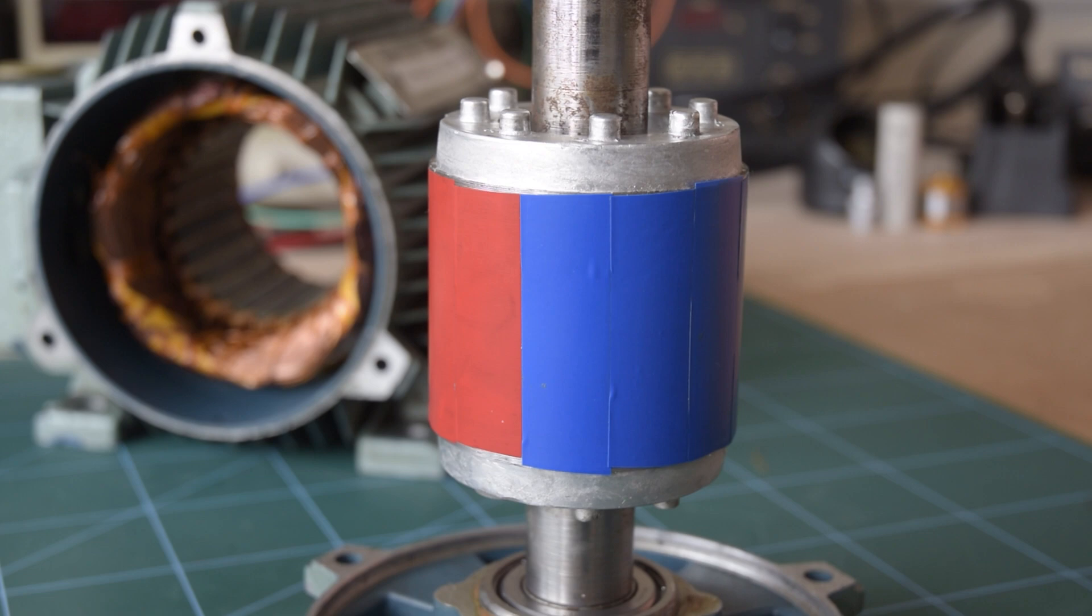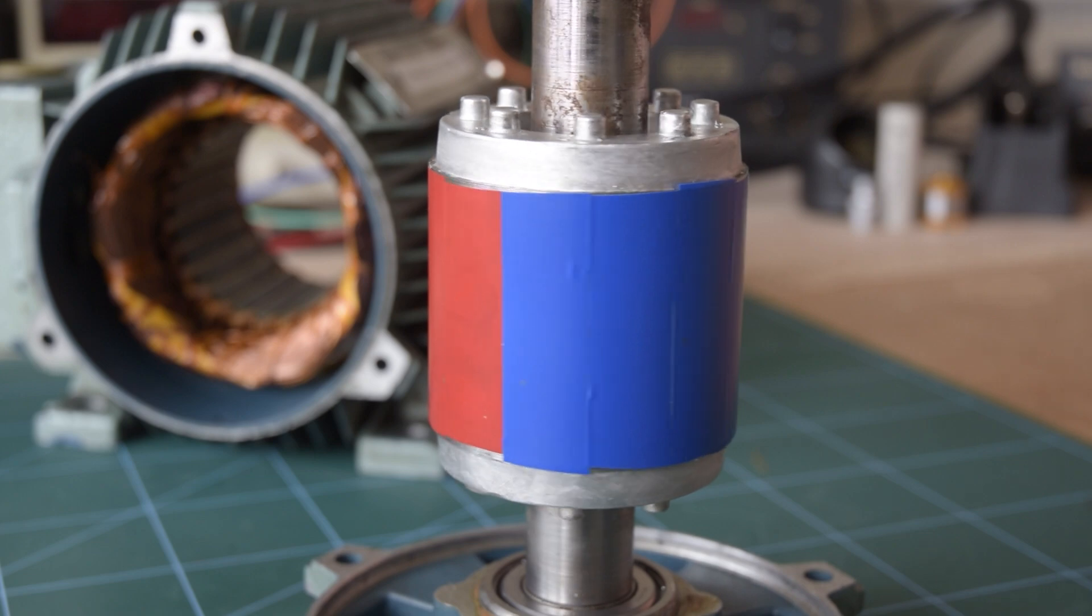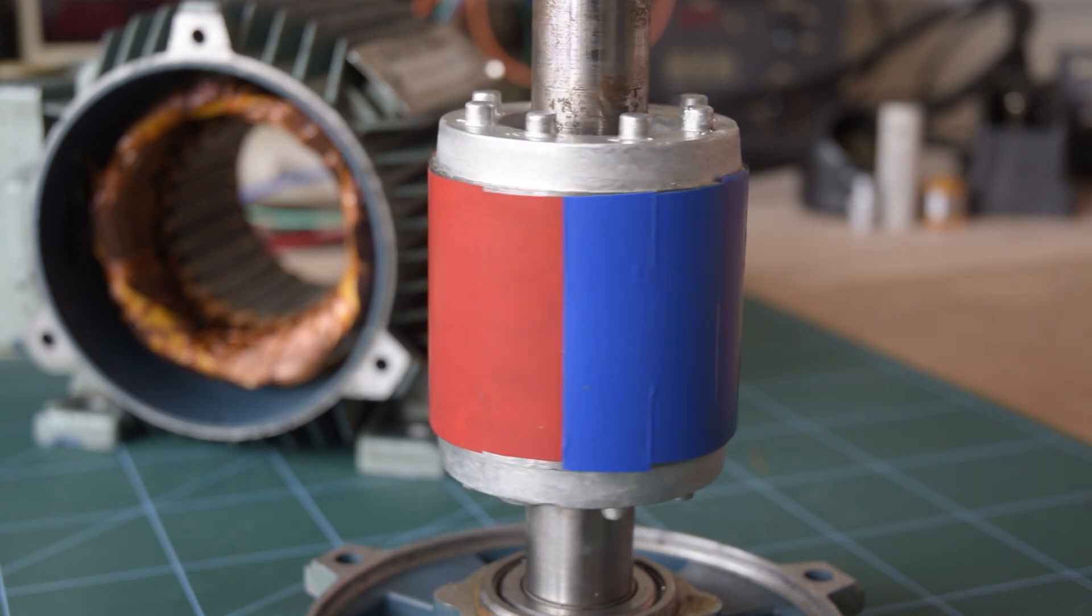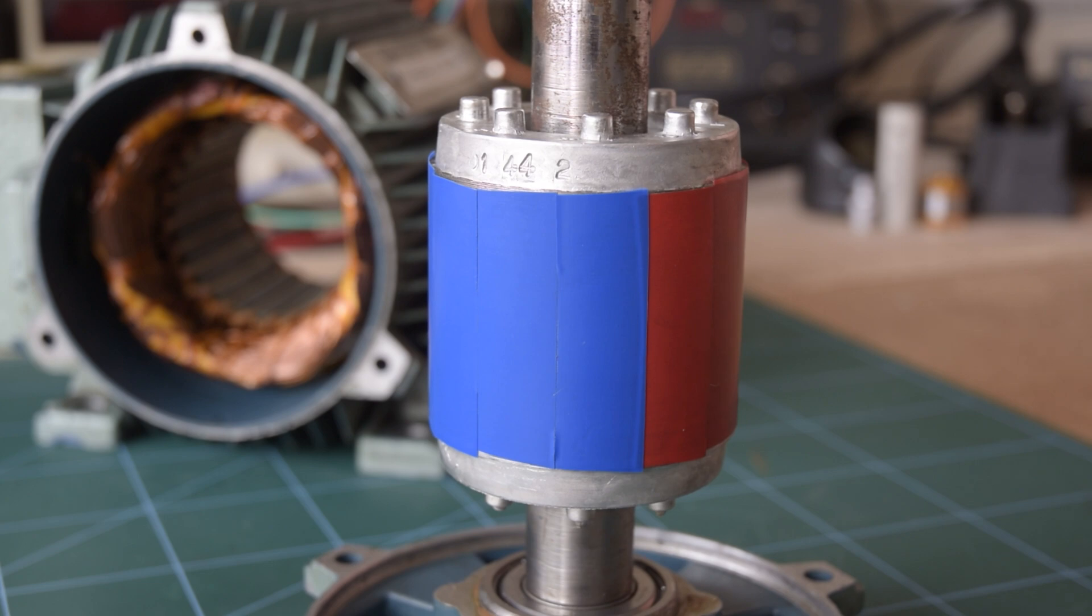The number of magnets in the rotor determines the number of poles that the motor has. This rotor is two-pole because it has a single magnet with a north and a south pole, and there will always be an even number of poles because every magnet brings two. Most EVs use four or six-pole motors.